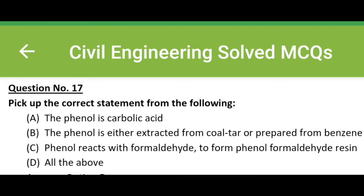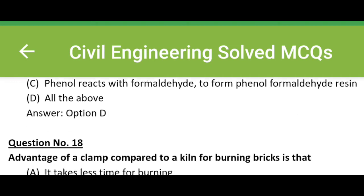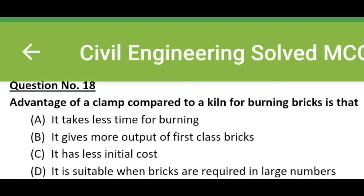The correct answer is option D, all the above. Advantage of a clamp compared to a kiln for burning bricks is that: Option A, it takes less time for burning. Option B, it gives more output of first-class bricks. Option C, it has less initial cost.